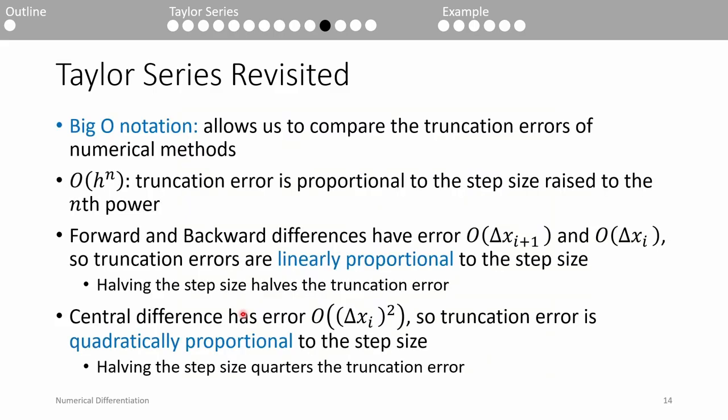Here's a slide explaining big O notation a little more formally. The key takeaways are that the truncation error in the forward and backward difference is proportional to the step size, whereas the truncation error in the central difference is proportional to the square of the step size.